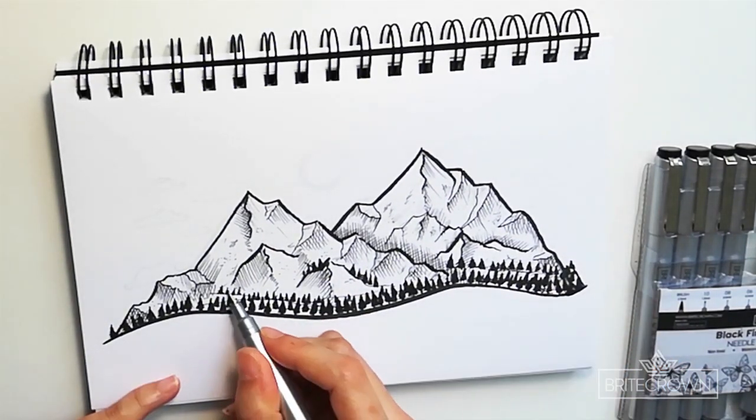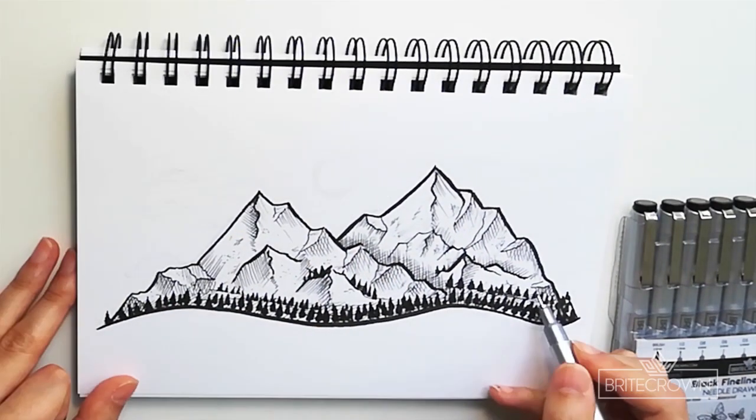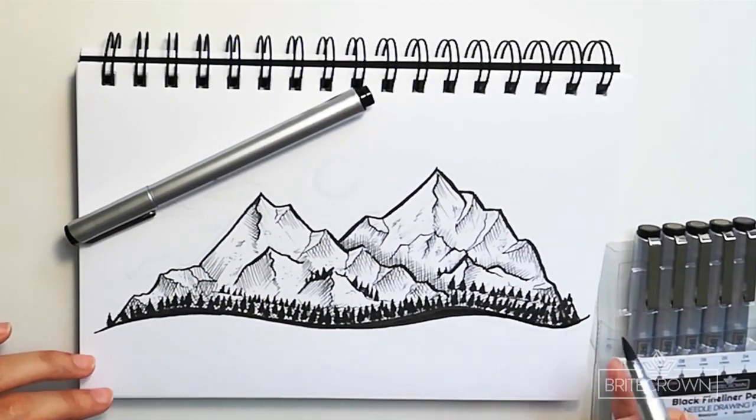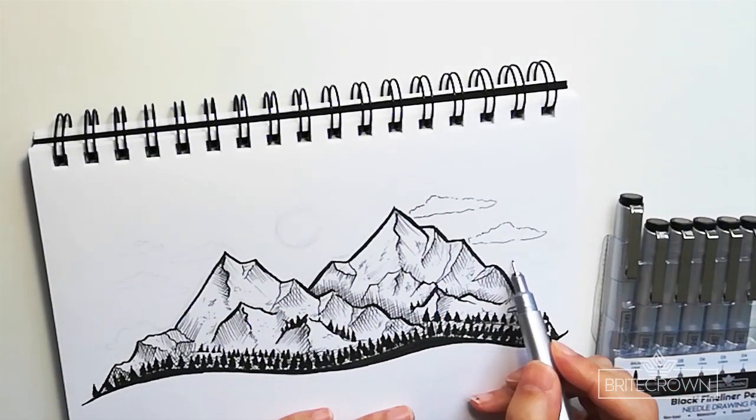Now I'm just going over and adding some shadow using my thinner tip and cleaning up any lines. Now using a smaller tip I can create some clouds in the background.